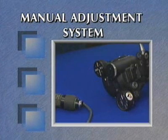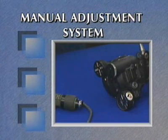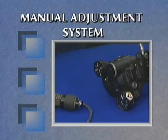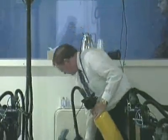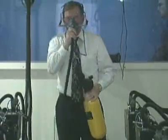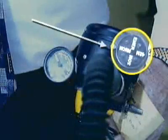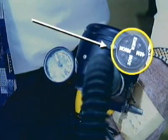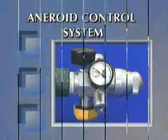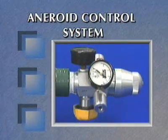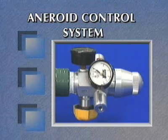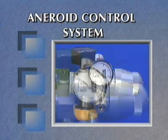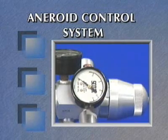The second type of continuous flow regulator incorporates a manual adjustment knob. This allows the user to increase or decrease the oxygen flow rate corresponding to aircraft cabin altitude or physical exertion, ensuring proper blood oxygen saturation and efficient use of the oxygen supply. The third type of continuous flow regulator uses an aneroid control to automatically increase or decrease the oxygen flow rate, corresponding only to the aircraft cabin altitude.